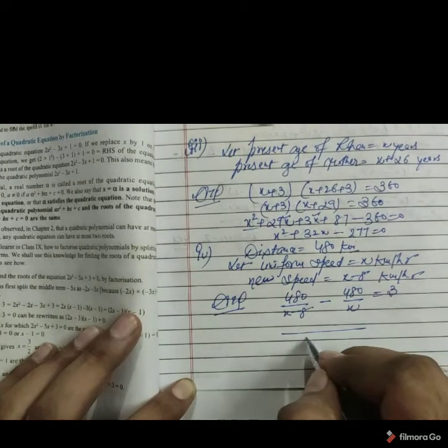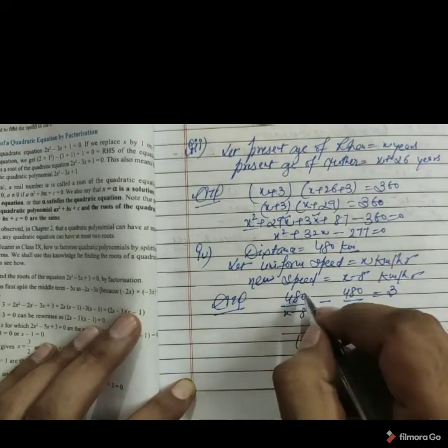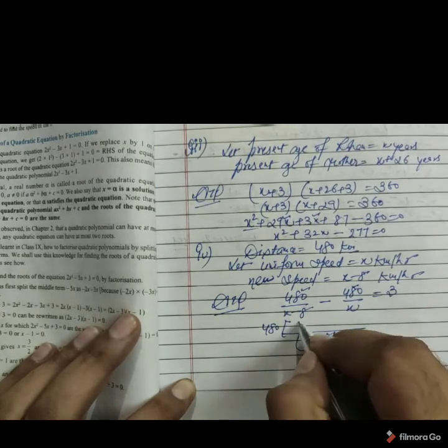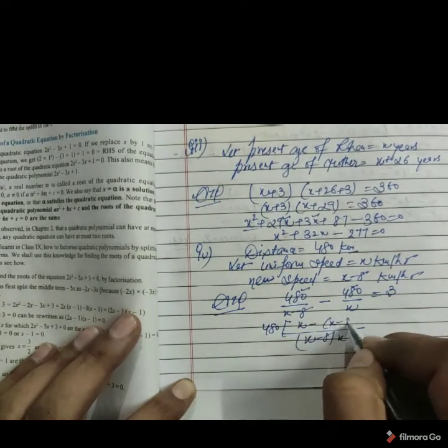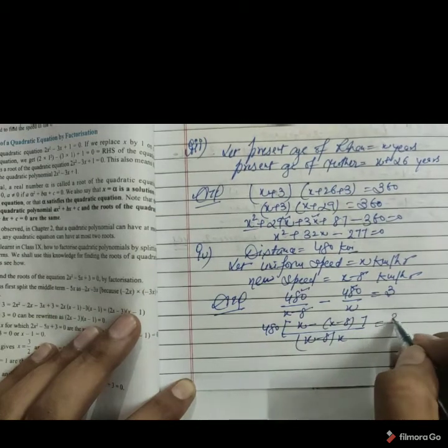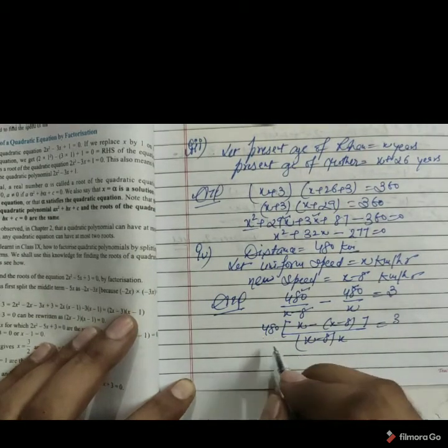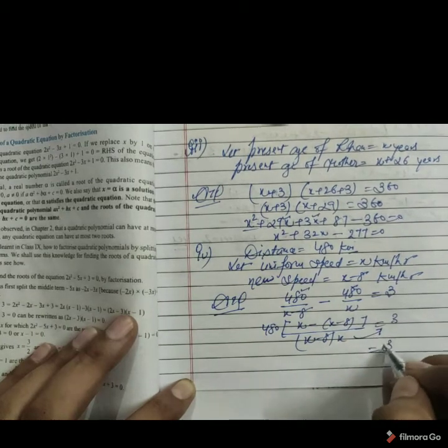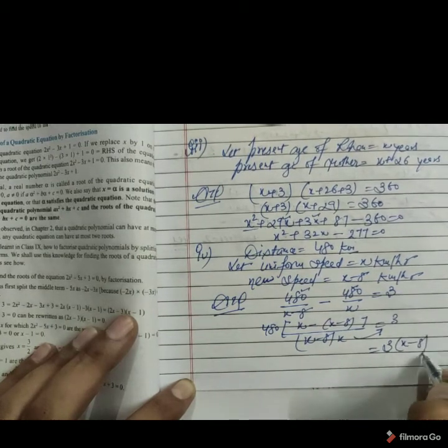Taking LCM, we get x minus 8 with x. 480 is common. We can take outside. We get from here x minus x minus 8 on the right hand side we are having 3. If we shift this data, cross multiply, it becomes 3 times x minus 8 with x.